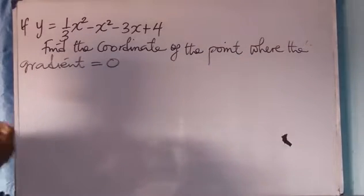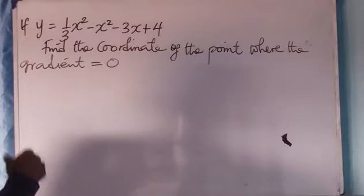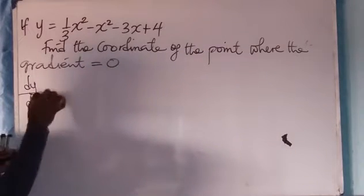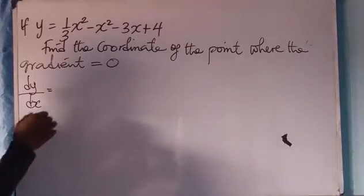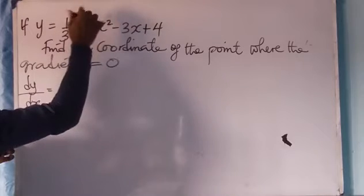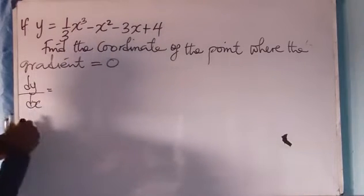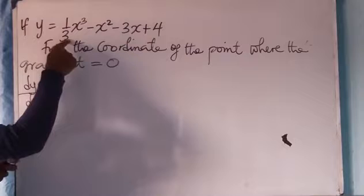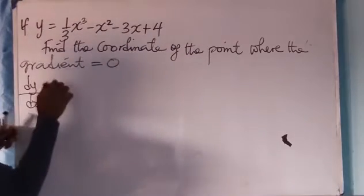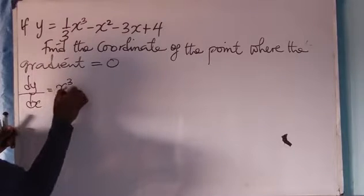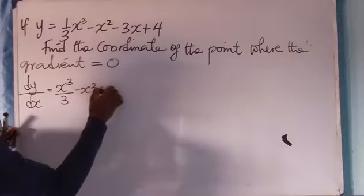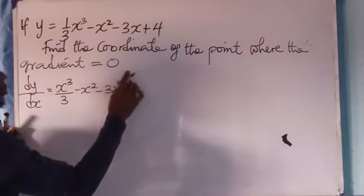Now, the first thing you do, we know is dy/dx. You have dy/dx. Now, it's just like saying x raised to the power 3 times 1, you have x raised to the power 3 over 3, then minus x squared minus 3x plus 4.